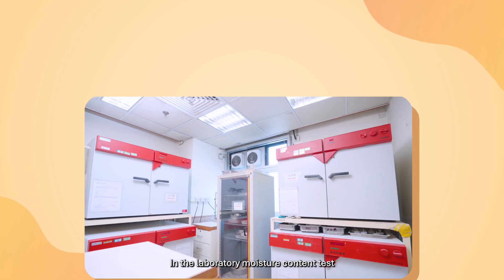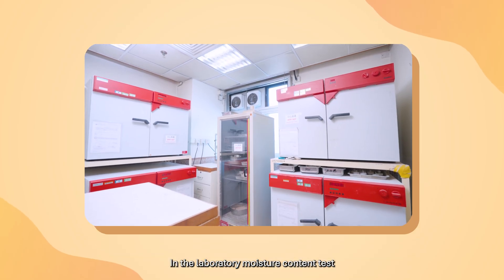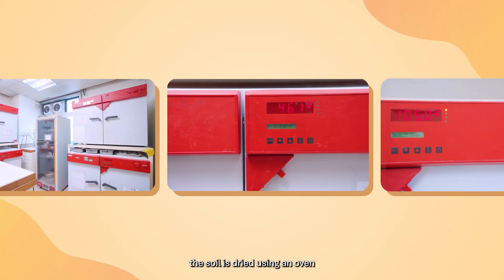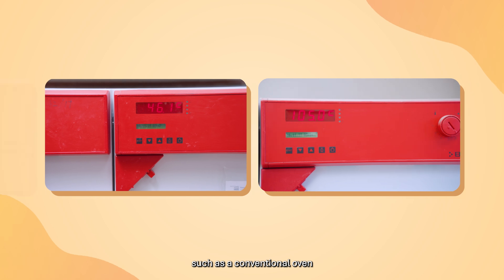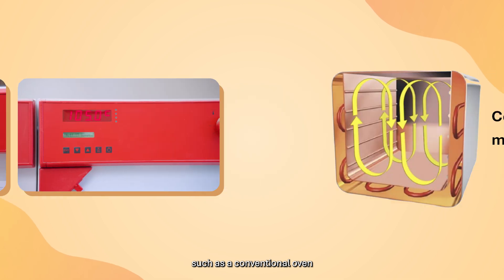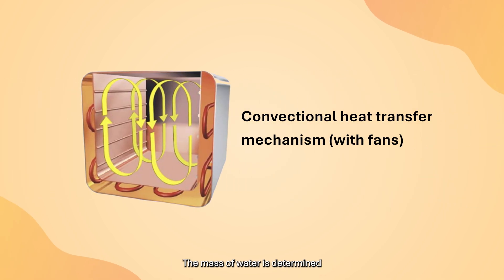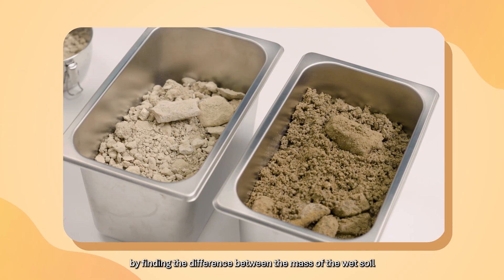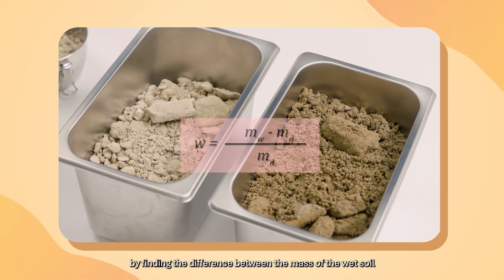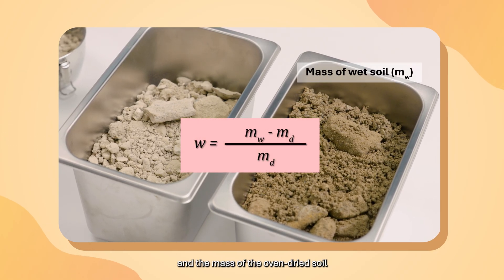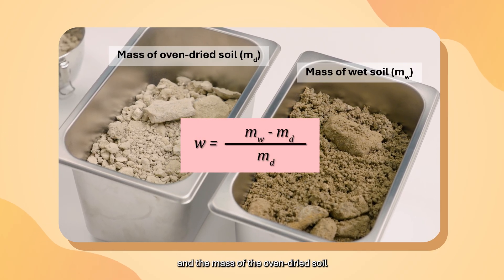In the laboratory moisture content test, the soil is dried using an oven, such as a conventional oven with a conventional heat transfer mechanism. The mass of water is determined by finding the difference between the mass of the wet soil and the mass of the oven-dried soil. The mass of soil grains is simply the mass of the oven-dried soil.